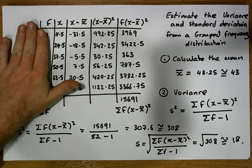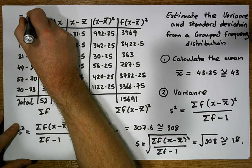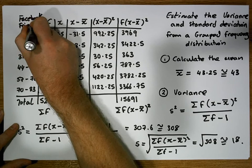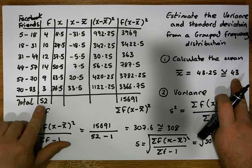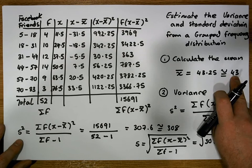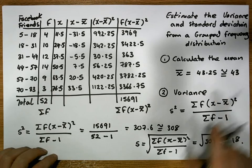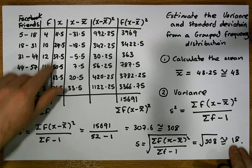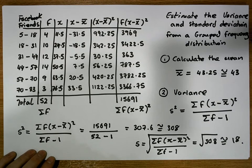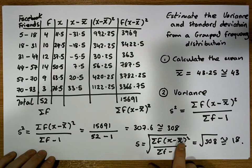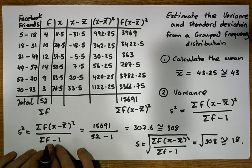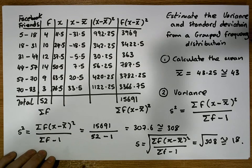The measure of center for this distribution — the number of Facebook friends — is 43; on average the 52 respondents have 43 Facebook friends. On average, a respondent is 18 Facebook friends away from that mean of 43, and that's what the standard deviation represents: the average distance observations are from the mean. The variance is the average squared distance from the mean. This is Jonathan Lambert with the Mathematics Development and Support Service at the National College of Ireland.